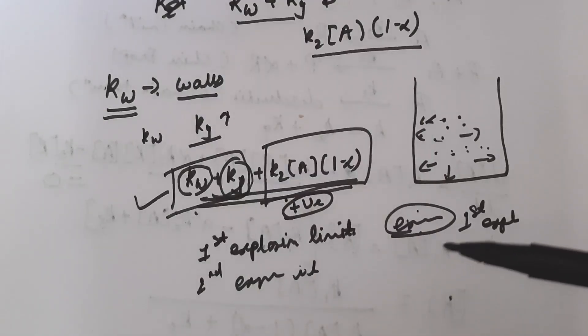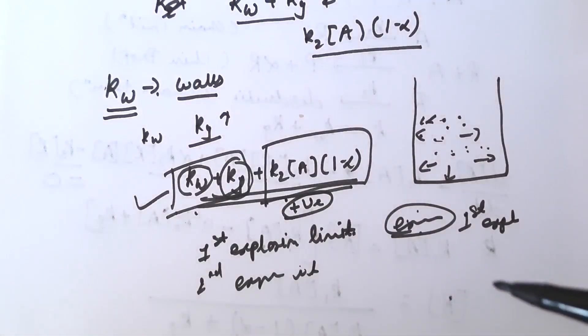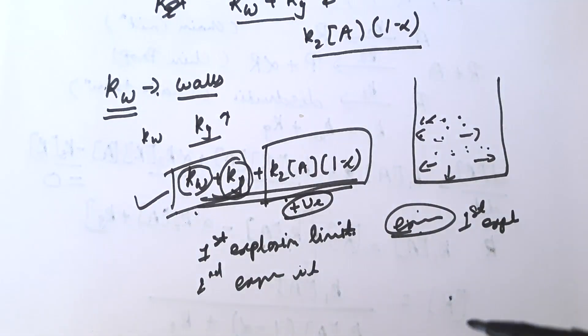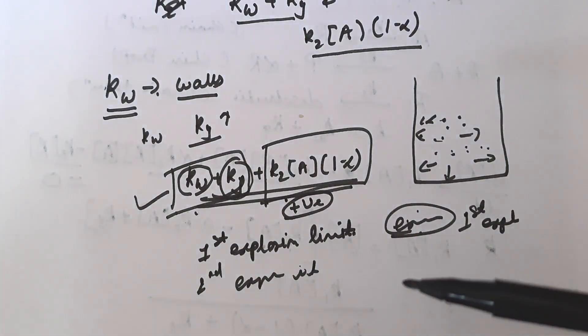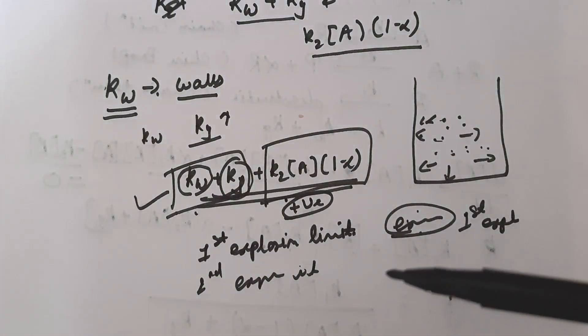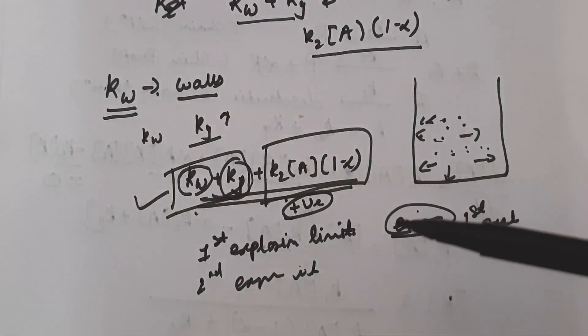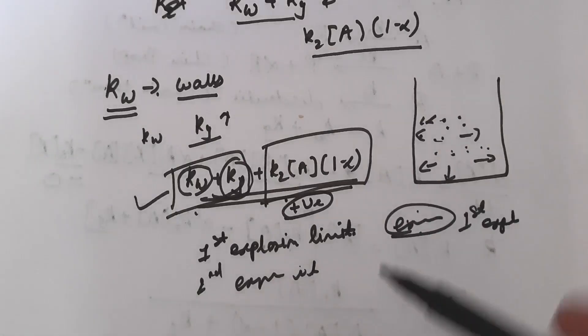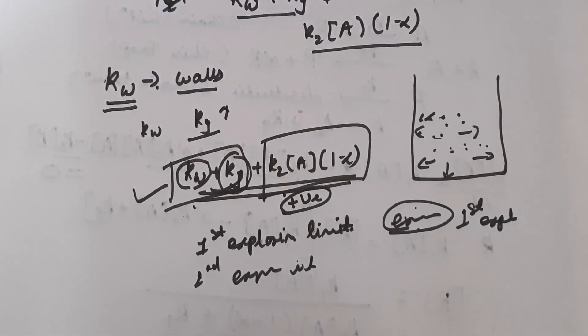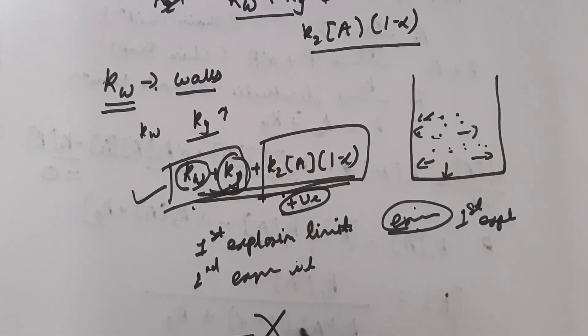Nuclear reactions are also examples of branched chain reactions. This explains how chain carriers and explosion limits arise in branched chain kinetics. Thank you very much.